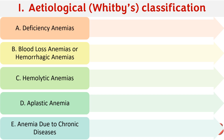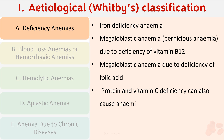Under deficiency anemias we have iron deficiency anemia, in which iron is deficient; megaloblastic anemia due to deficiency of vitamin B12; megaloblastic anemia due to deficiency of folic acid; and protein and vitamin C deficiency, which can also cause anemia. These are all caused by a deficiency of something, hence they are called deficiency anemias.